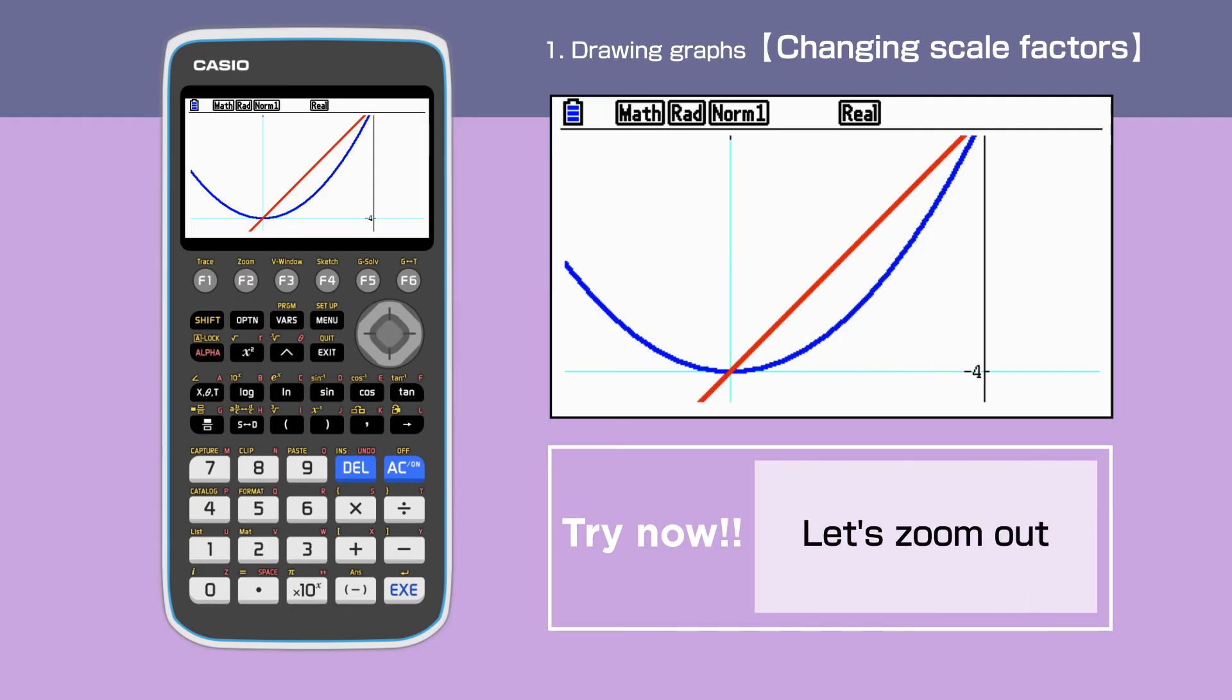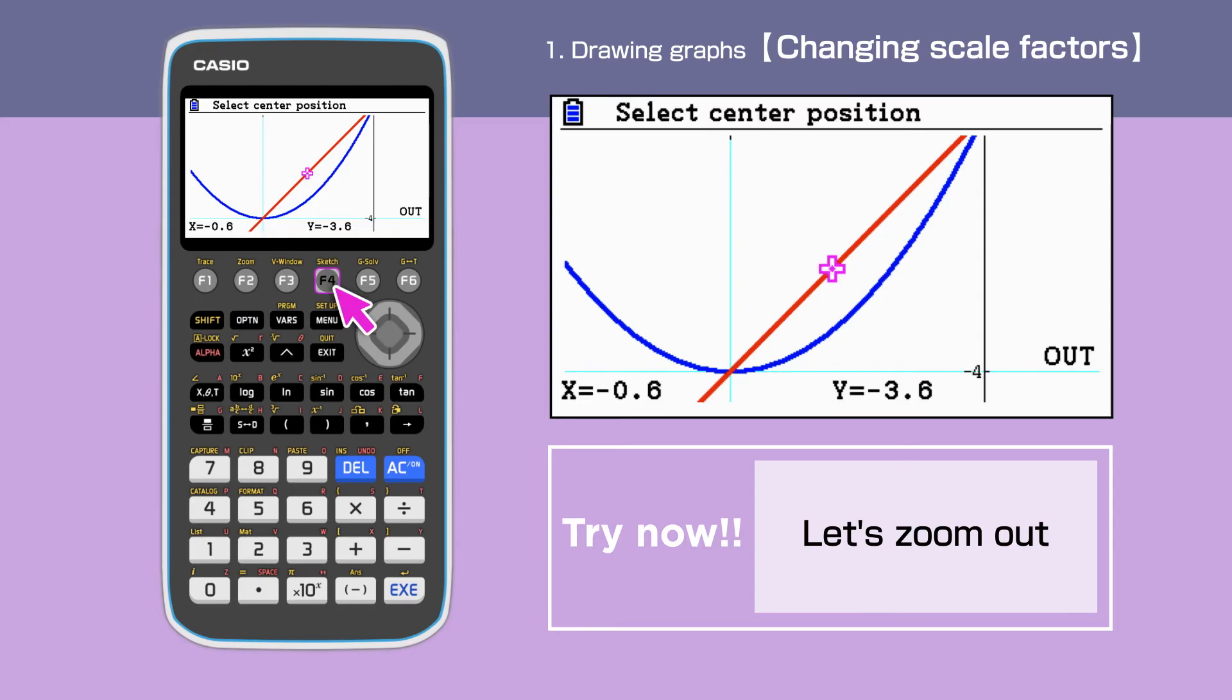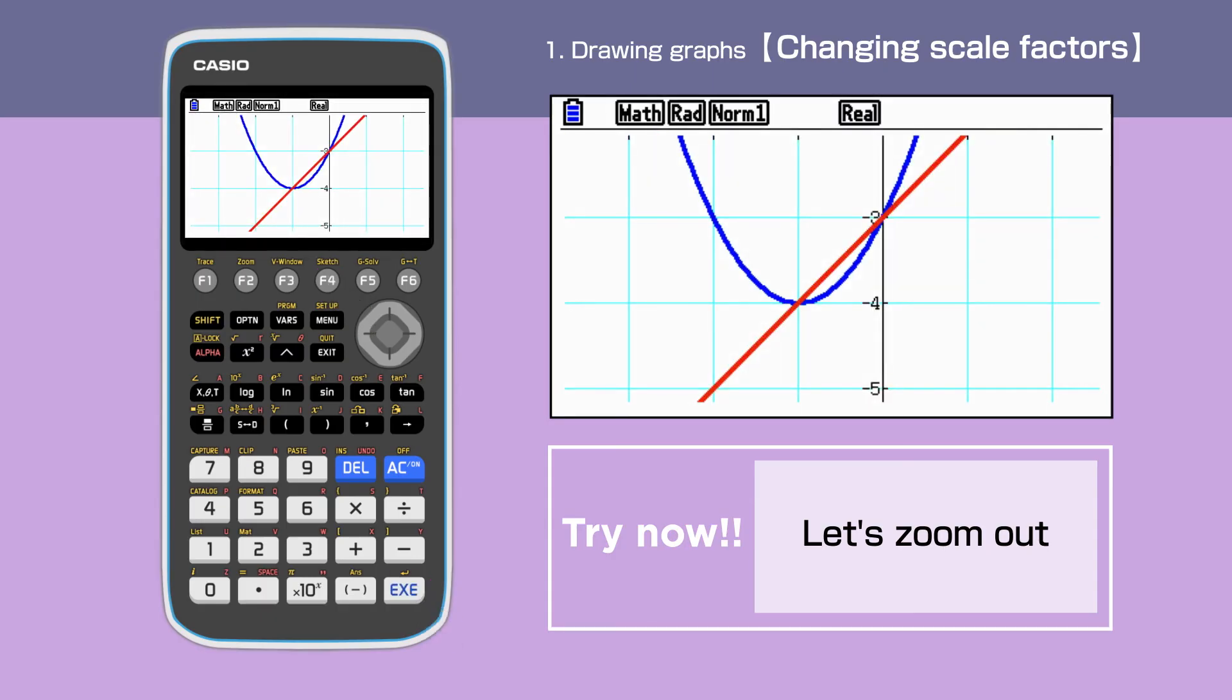Next, we will zoom out. Press Shift, F2, F4, then execute. The graphs have been zoomed out with the scale factors we have just set.